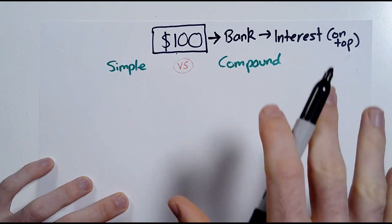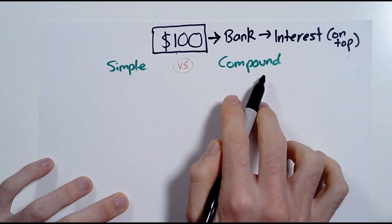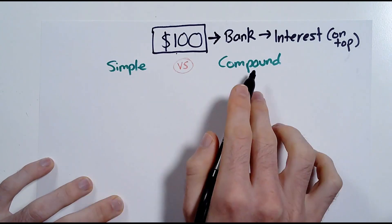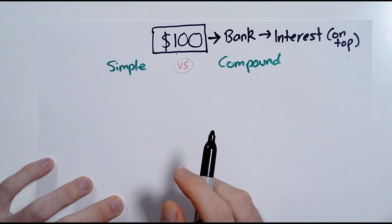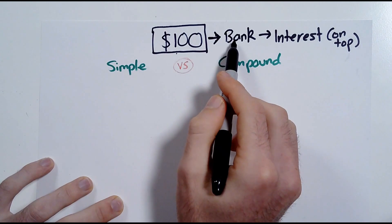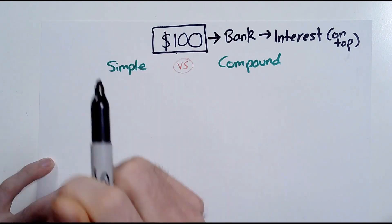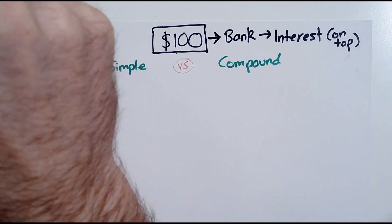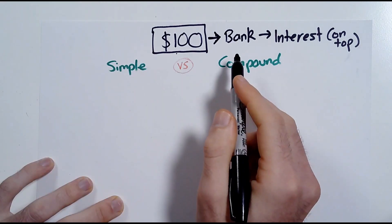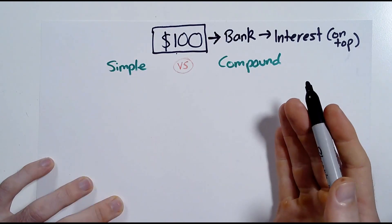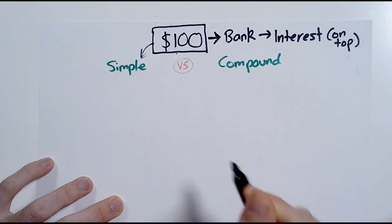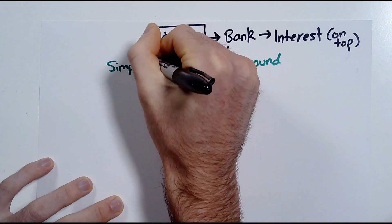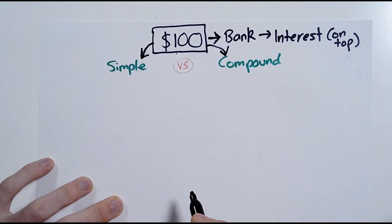I've allowed the bank to use my money, and I've gone without my $100 for a period of time. So the bank has to pay me a little bit extra to incentivize me to leave my money with them. The question then becomes: what type of interest am I earning — simple interest or compound interest? These two forms of interest have different formulas, and the terms of the loan or deposit will make clear which applies.